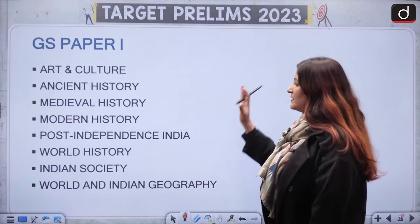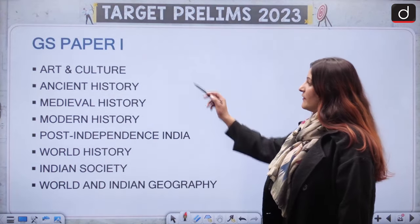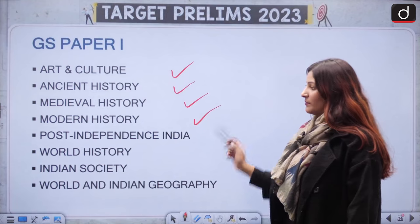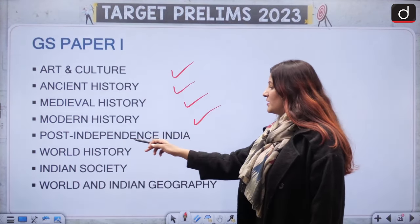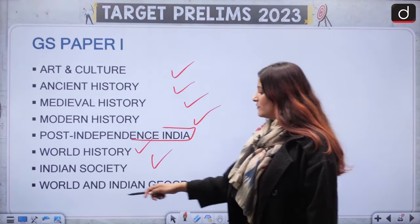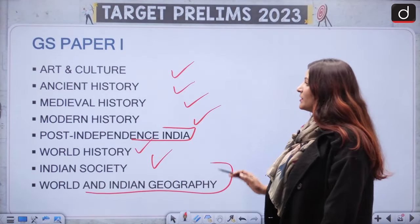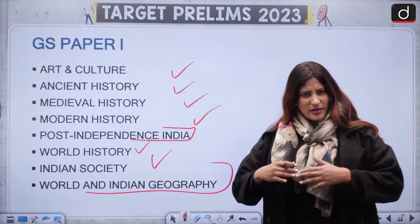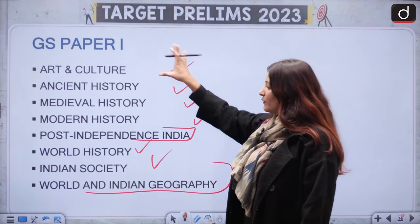I have divided the entire subject segment-wise when I talk about GS Mains Paper One. We have Art and Culture, Ancient History, Medieval History, and Modern History. For Mains specifically, Post Independence is important. Apart from this, World History, Indian Society, and Indian Geography are also important for both prelims and mains. I've divided it into four parts to avoid it becoming too lengthy.